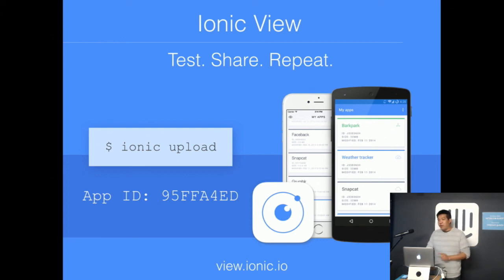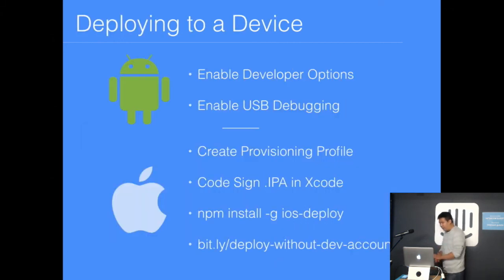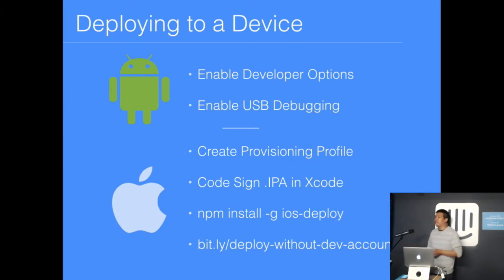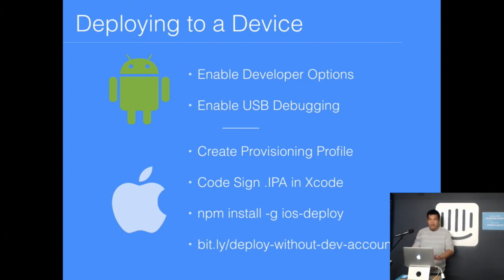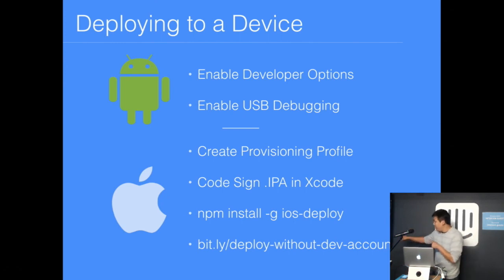View.io has links to the App Store and Google Play Store, and this app ID will show you the exact app I just built. If you want to do a full deploy to a device for actual testing, it's a bit harder. On Android you have to enable developer options and USB debugging. On Apple it's even harder — you have to create a provisioning profile, code sign the IPA in Xcode, and install an NPM dependency called iOS Deploy.